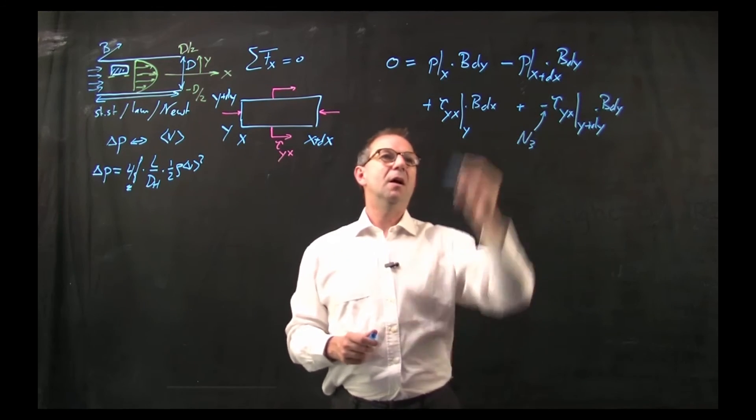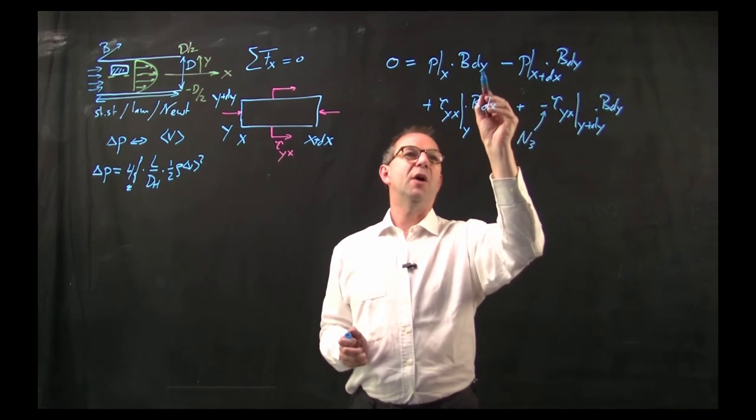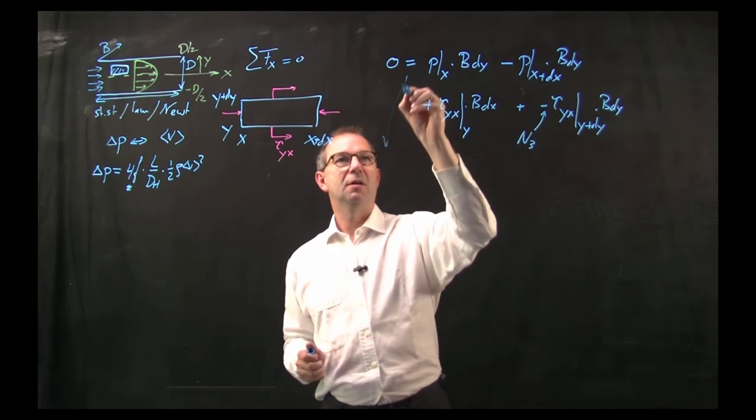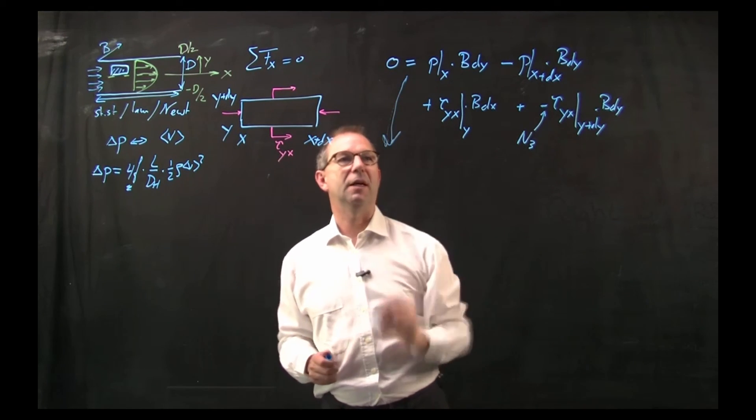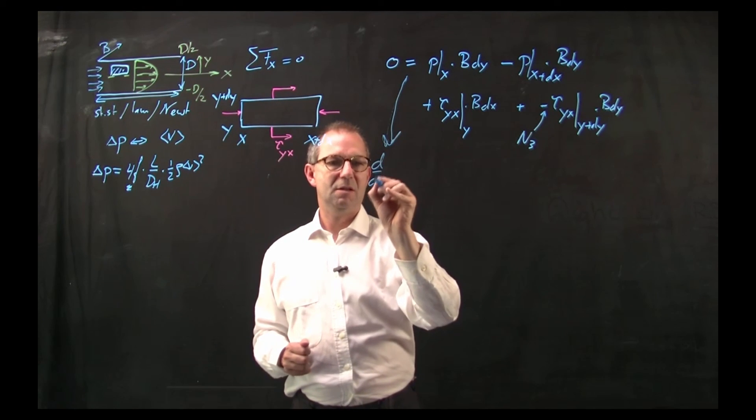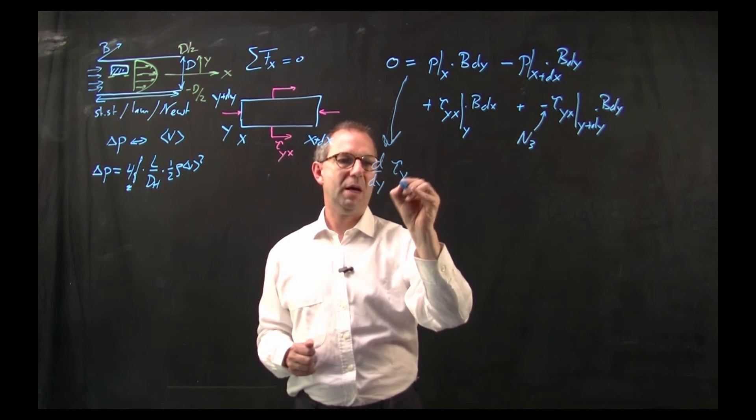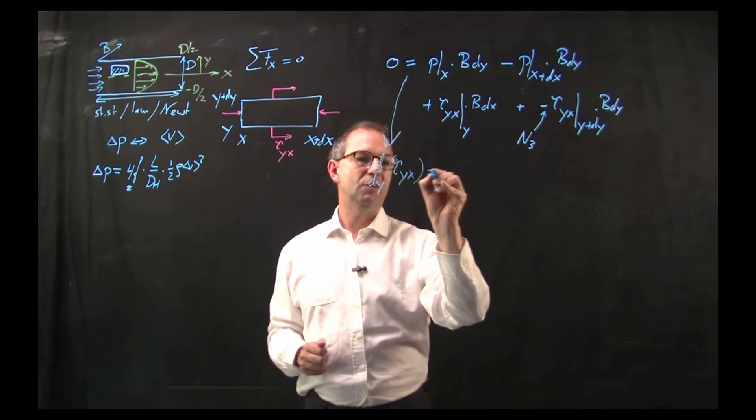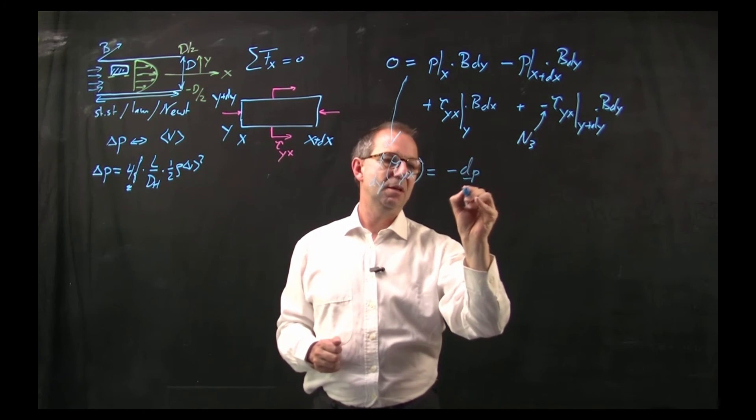I can scratch out the B's, I can divide by dy and dx and if I do that I get a differential equation: d/dy tau yx equals minus dp/dx.